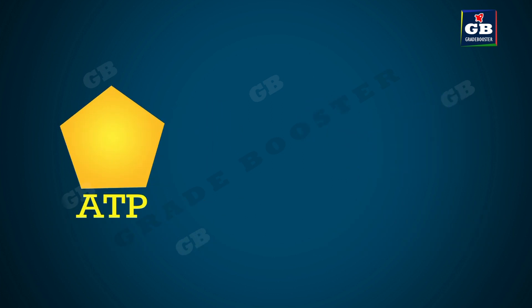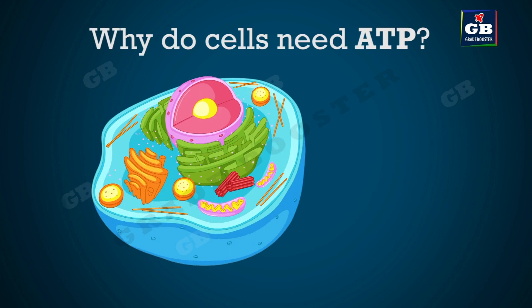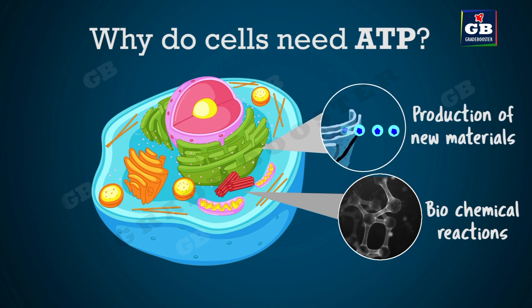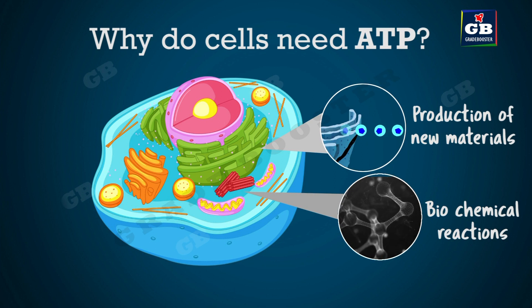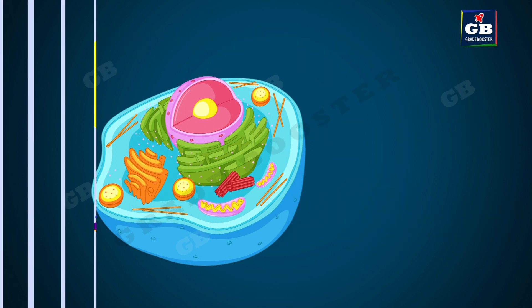Now let us see what ATP is. ATP — adenosine triphosphate — are energy-rich molecules. In our cells, many reactions take place, and all these reactions need energy. There are also many new materials produced in our cells, and for the production of these new materials, ATP is required. That is why ATP is called the cell currency or energy currency of the cell.